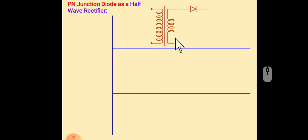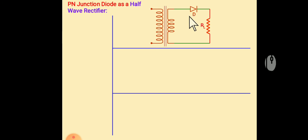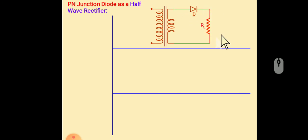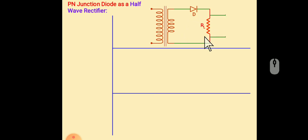At the secondary, if there is one diode only, then it is called a half-wave rectifier. Then we will get the output at the load. If only one half cycle is converted to output, then it is called half-wave rectifier.